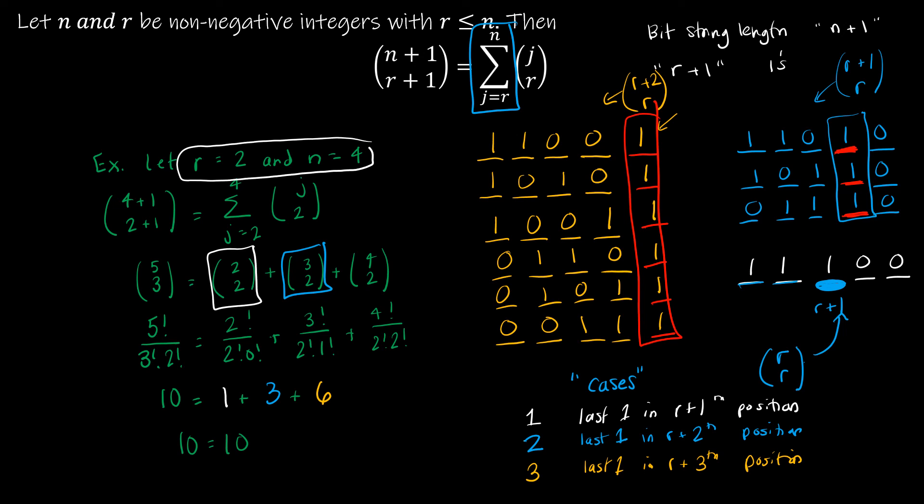And you can see that that would continue and continue and continue. So even though I've chosen a smaller example, so that would all fit on one page, we can see that that would continue. So the next one would be r plus 3 choose r, and the next one would be r plus 4 choose r.